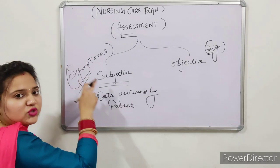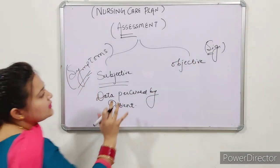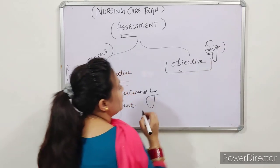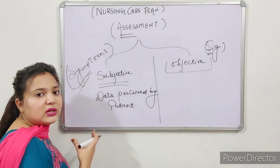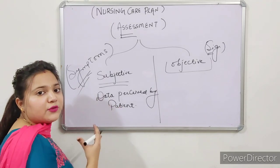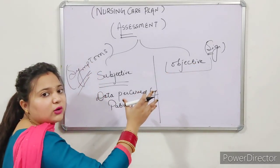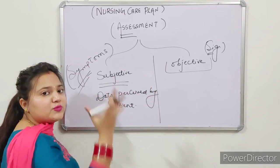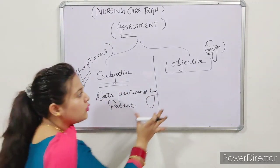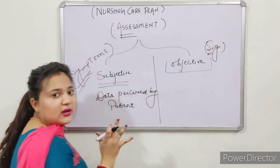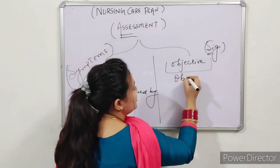Symptom is subjective whereas sign is objective. Now for objective assessment: objective data is what we observe. You can remember it this way — both 'objective' and 'observation' start with O. Objective data is observed by the physician.